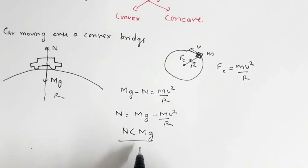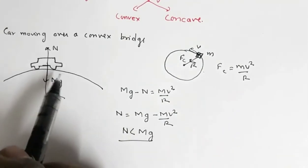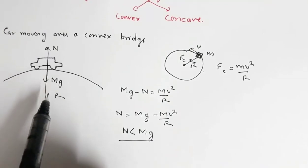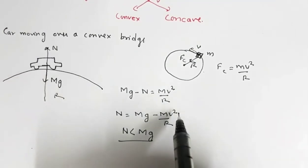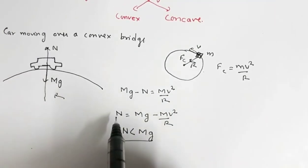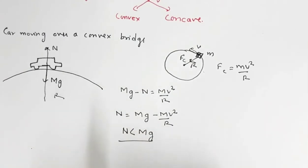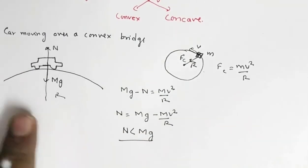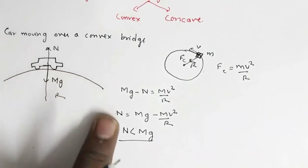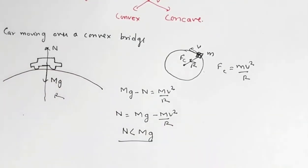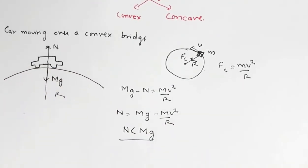This implies that the normal reaction N is less than mg. So the car will feel lighter than the same car standing stationary on the same bridge — when stationary, that mv²/r term is zero and N equals mg. The car feels lighter while moving over this convex bridge with speed v.